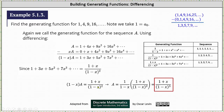The last step to find the generating function for the given sequence is to solve for a. We do this by multiplying both sides by 1 divided by the quantity 1 minus x. The final result is a equals the quantity 1 plus x divided by the cube of the quantity 1 minus x. I hope you found this helpful.